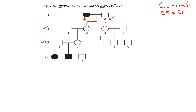Another piece of evidence for recessive inheritance is that heterozygous parents do not have the disorder themselves. A big indicator that parents are heterozygous is when they have some kids with the disorder and some without. Looking at individuals 3-1 and 3-2, they are unaffected but had some kids with the disorder and some without — that suggests both are heterozygous carrying the recessive allele.